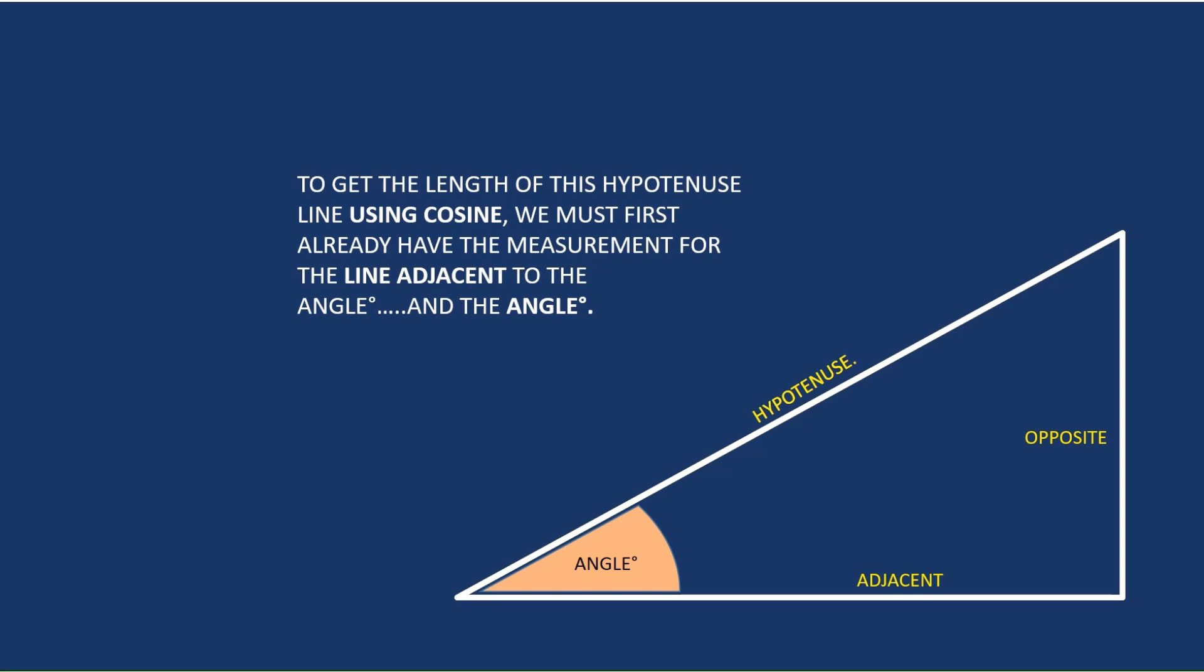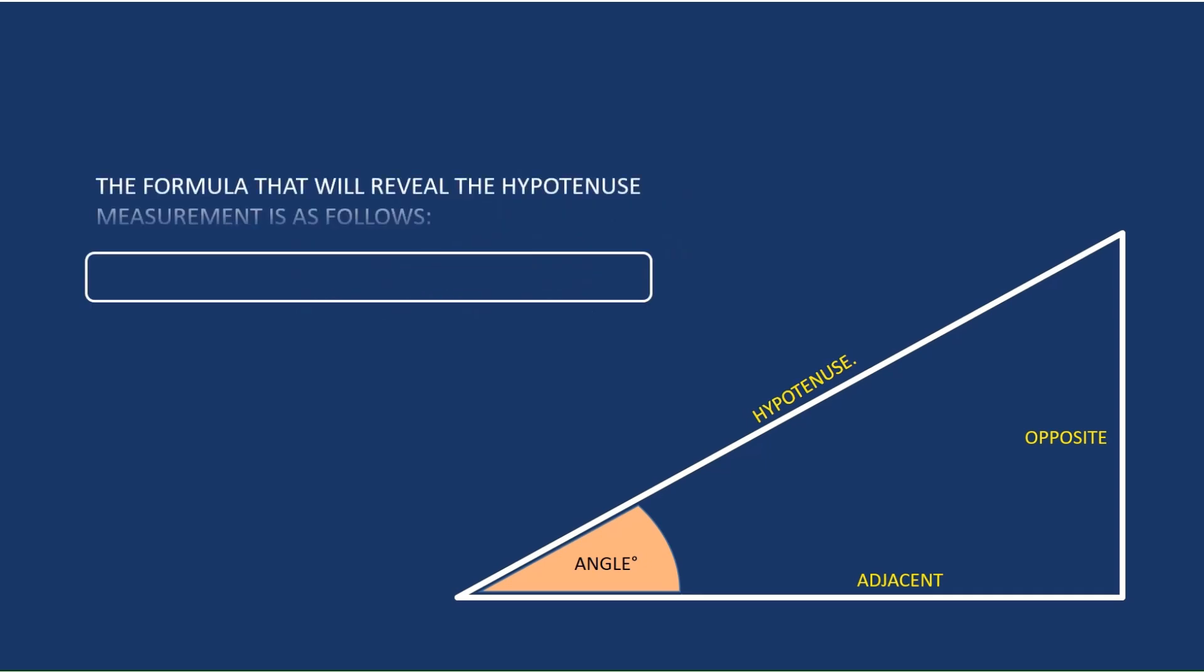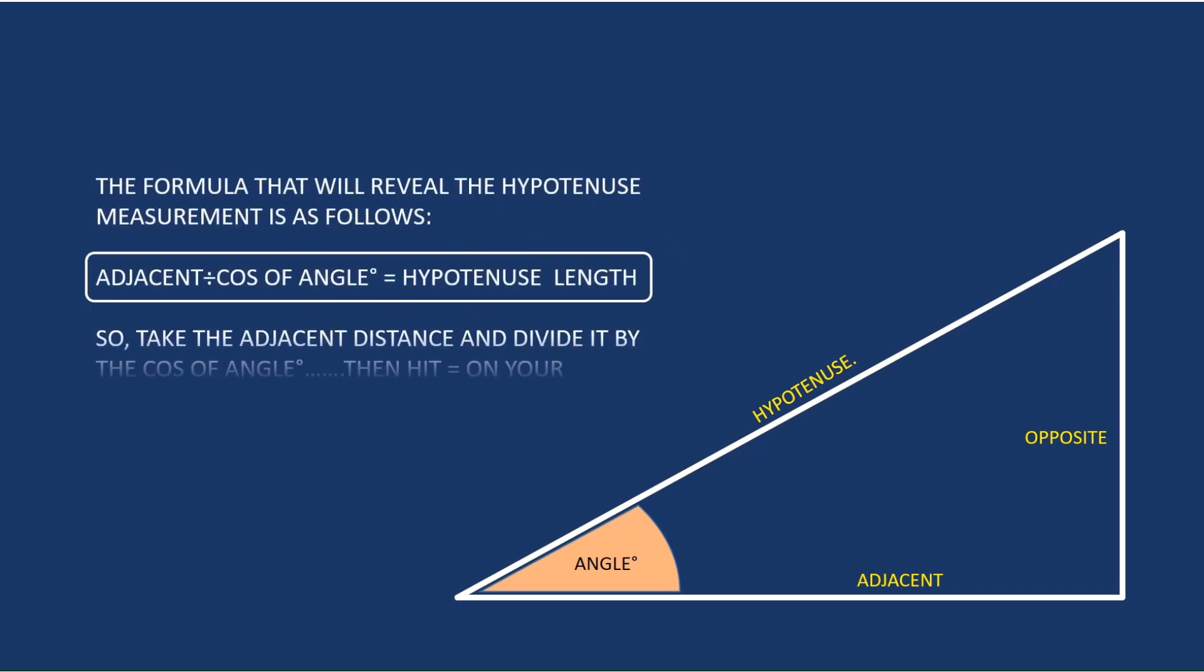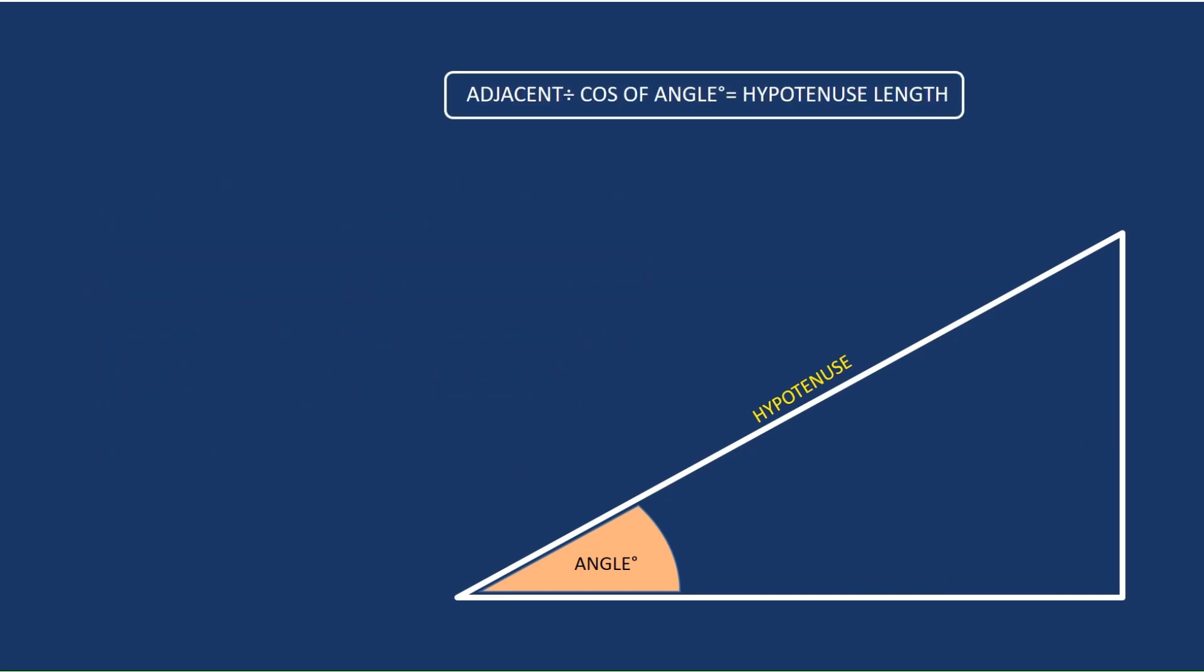Those are the two givens you have to have if you're using this particular formula, the adjacent and the angle. The formula there as you can see is adjacent divided by cos of the angle. Hit equals and that should be the length of the hypotenuse on that right angle triangle there.